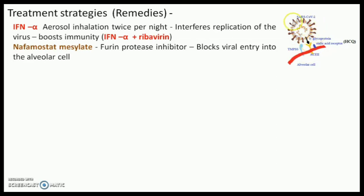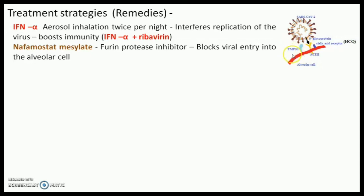With the help of the spike protein, the virus binds with the ACE2 receptor and enters into the cell. This protease breaks the S-protein into S1 and S2 fragments, and then the virus enters. So if you inhibit this serine protease, the entry of the virus can be blocked.